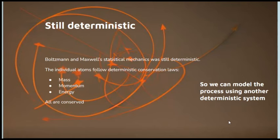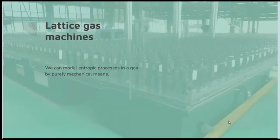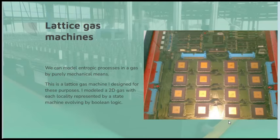Now, if we take this fact that everything at the micro level is deterministic, it means we can model an experiment with this passage of time using other deterministic systems. And the deterministic system I'm going to be talking about are lattice gas models, which are simplified models of gas where you're modeling the processes in the gas by purely micromechanical means.